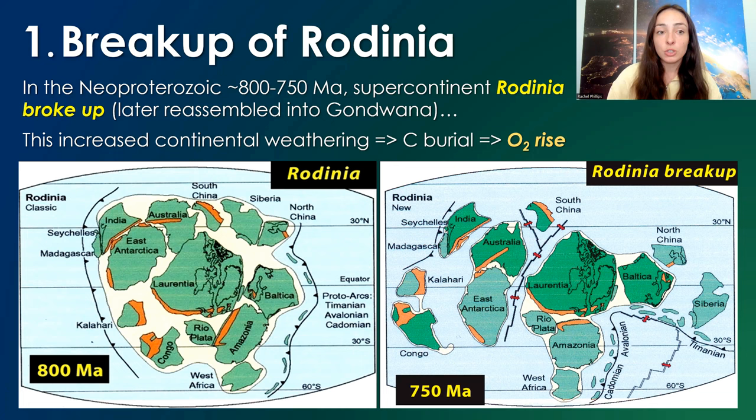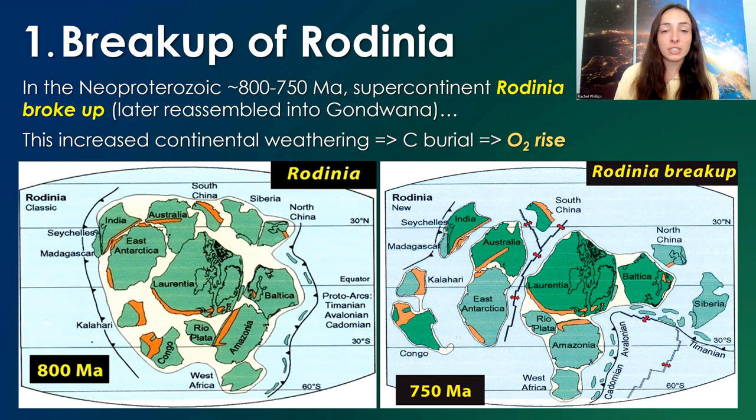This leads to an overall decrease of carbon in the atmosphere and ocean, leading to cooling and oxygen rise. The major sink for oxygen — the major way that oxygen is used up — is to oxidize organic carbon. And if a lot of it is getting buried, it escapes that oxidation, leaving behind more oxygen in the oceans and atmosphere.